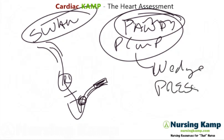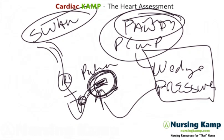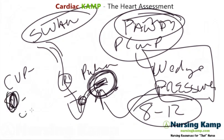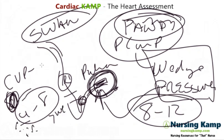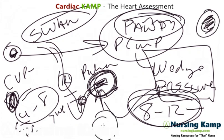That wedge pressure reflects left-sided filling. Normal wedge pressure is 8 to 12. Just like CVP — where less than 4 is dry and greater than 8 is wet — wedge pressure works the same way: a greater number means the patient is more wet, and less than 8 means they are dry.